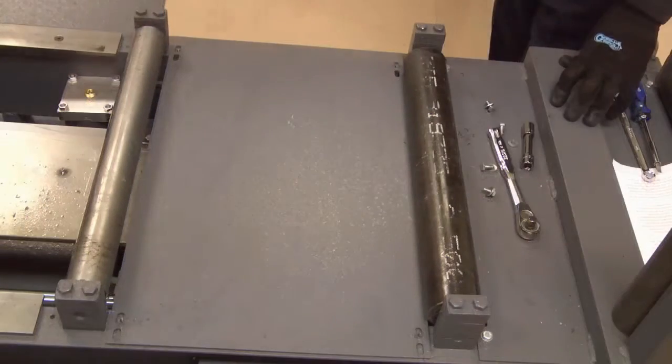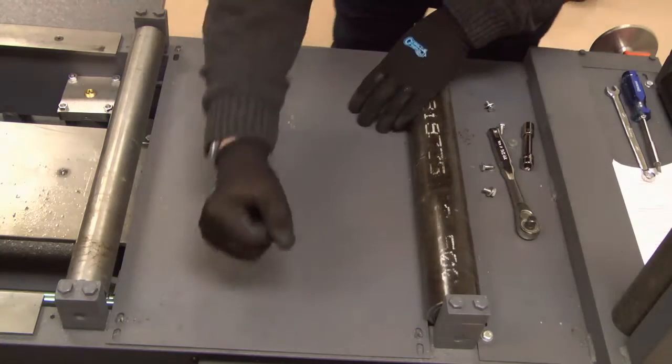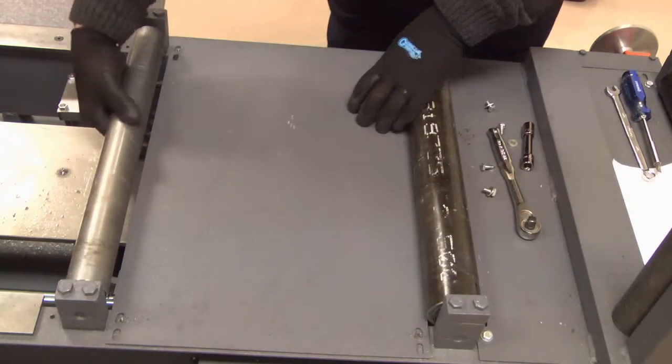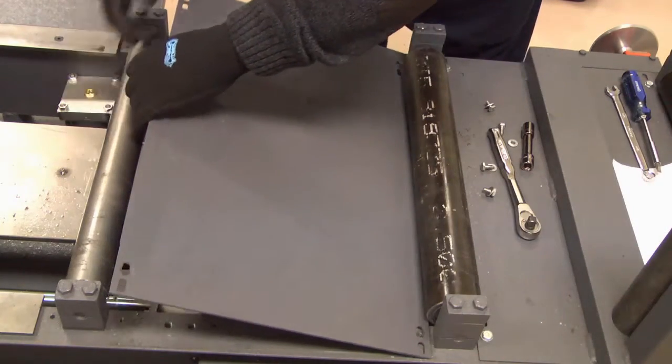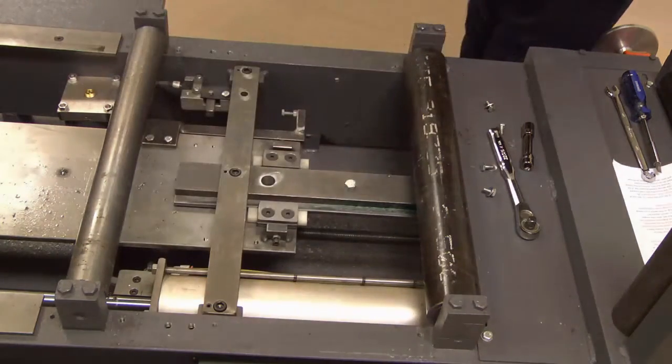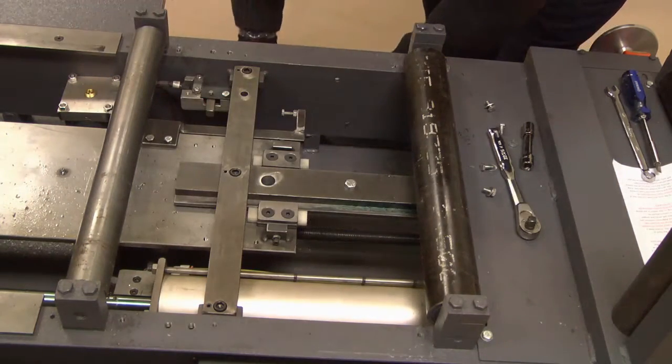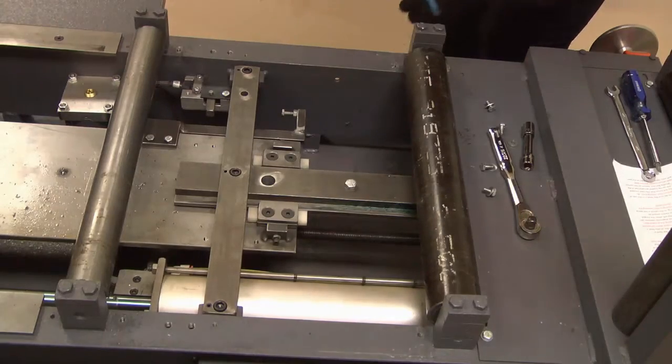Once the bolts are removed, lift the plate off. You may have to tap the plate slightly to release it. You can use a rubber hammer or just your hand and gently tap it to release it from the feed frame and store it out of the way.